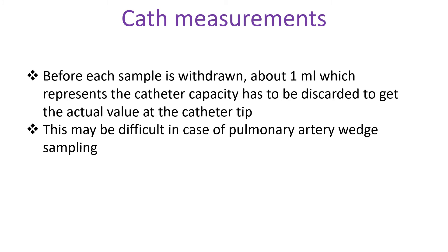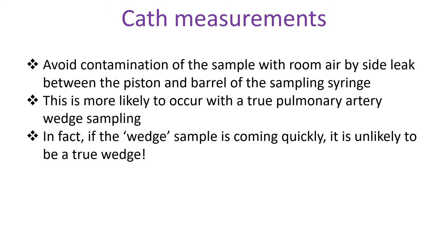This may be difficult in the case of pulmonary artery wedge sampling. Avoid contamination of the sample with room air by side leak between the piston and barrel of the sampling syringe. This is more likely to occur with a true pulmonary artery wedge sampling. In fact, if the wedge sample is coming quickly, it is unlikely to be a true wedge.